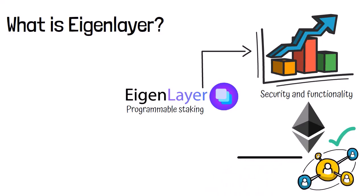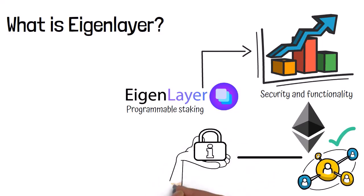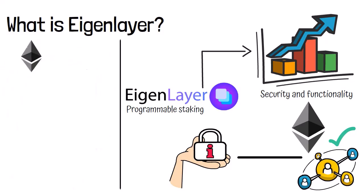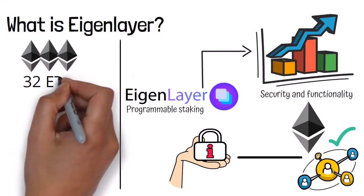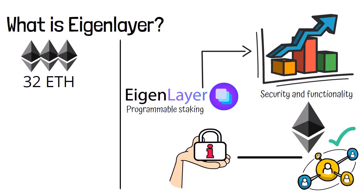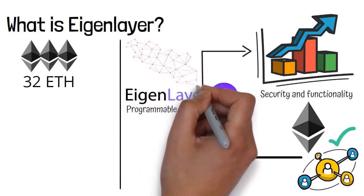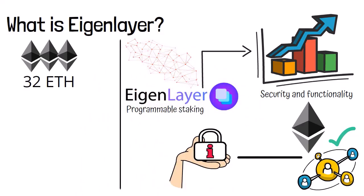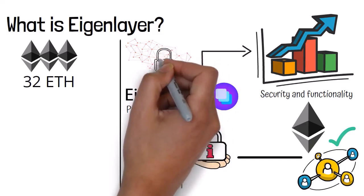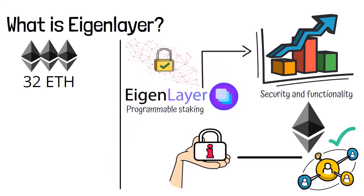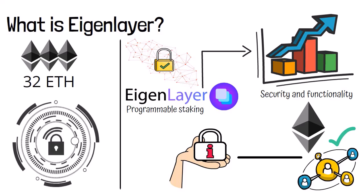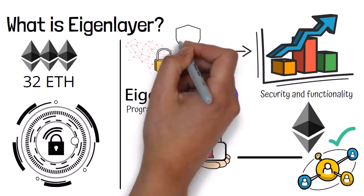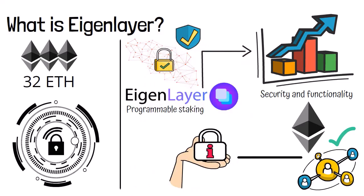This approach utilizes the validator's already established reliable infrastructure and significant financial stakes to provide security to multiple platforms simultaneously. In comparison to traditional Ethereum staking, where validators lock up 32 ETH to maintain the integrity of the Ethereum blockchain, EigenLayer extends this concept by enabling these validators to stake their assets across multiple networks, enhancing the security of smaller networks and creating a more interconnected and robust ecosystem.